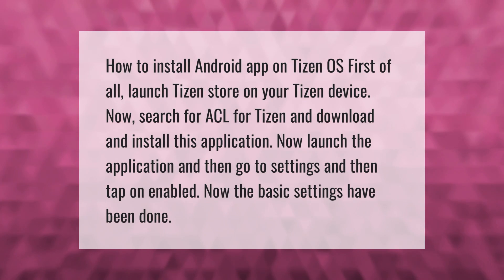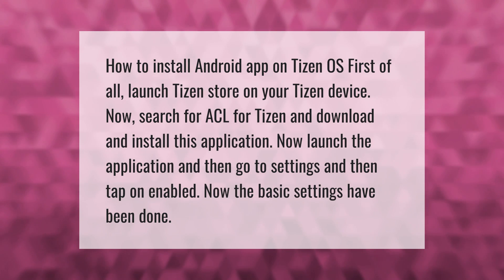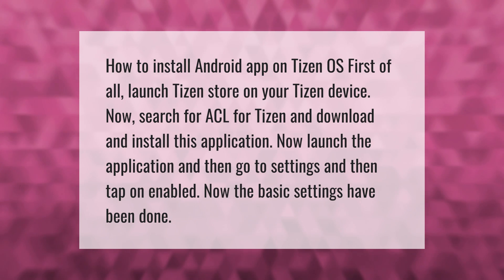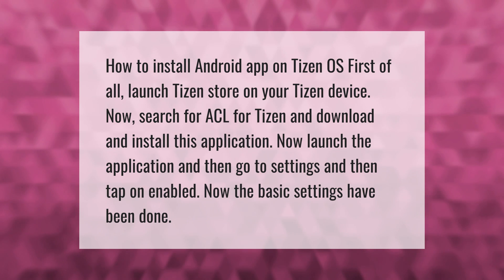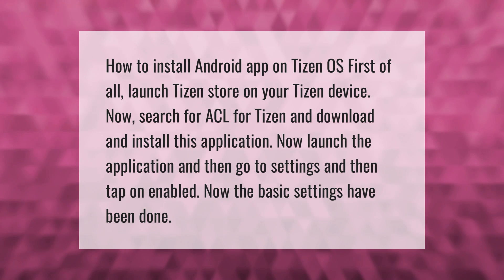How to install an Android app on Tizen OS. First of all, launch the Tizen Store on your Tizen device. Now search for ACL for Tizen, then download and install this application. Launch the application, go to Settings, and tap on Enabled. The basic settings have been done.